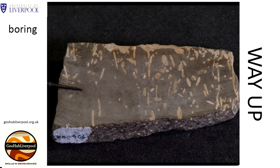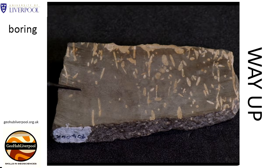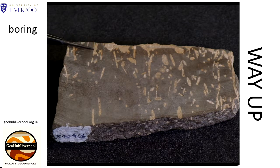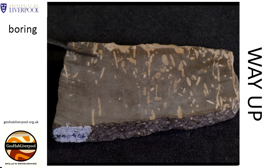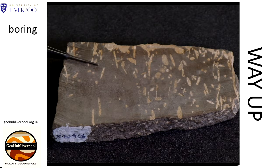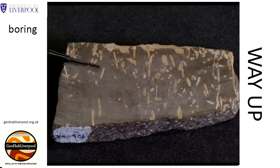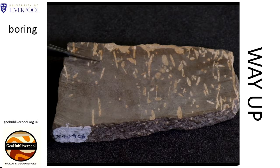This hard ground surface was bored by organisms that lived for protection in the holes they bored into the hard rock. These boreholes are filled with paler coloured material after they were formed. You can work out the direction of younging because the boreholes extend down from this top paler coloured surface.